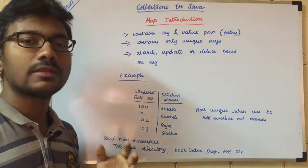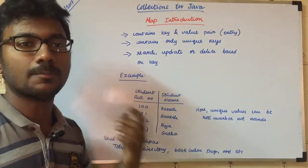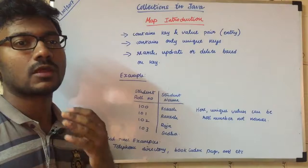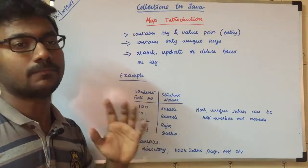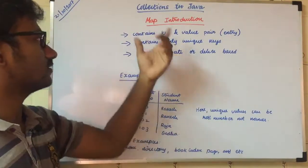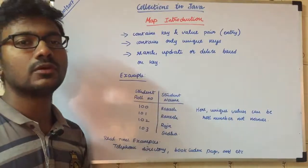Map is an important thing that is present in Java collections. Map plays a major role in any software, whether it's a simple program or complex software. This is just the introduction to this video. The next video will be in detail.